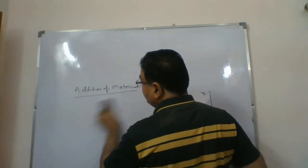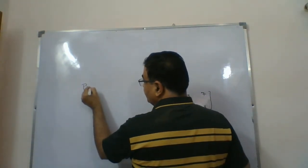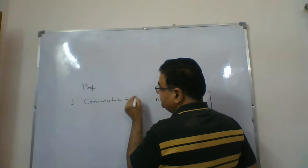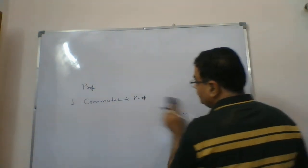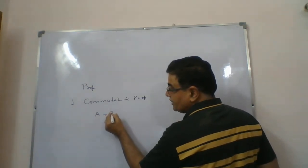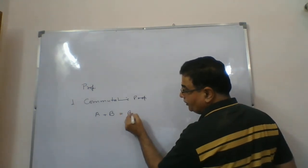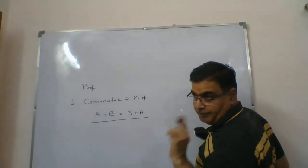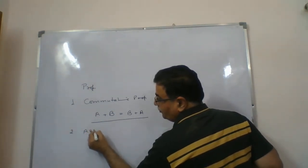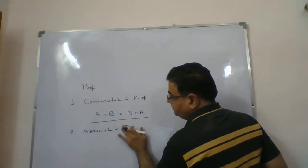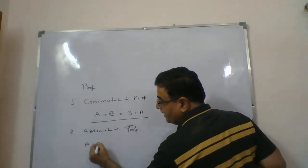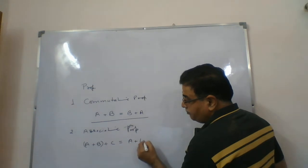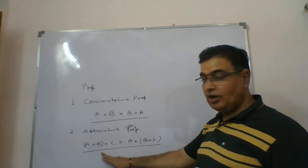Now, the properties of addition. The first property is the commutative property. It says that if you have matrices A and B of the same order, whether you compute A plus B or B plus A, the result is the same. So the commutative property holds for addition of matrices. The second property is the associative property: if we have three matrices A, B, and C of the same order, then A plus B quantity plus C equals A plus quantity B plus C. This is the associative property, which also holds.